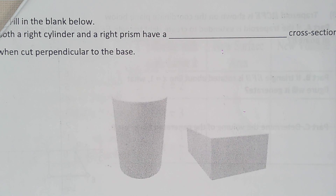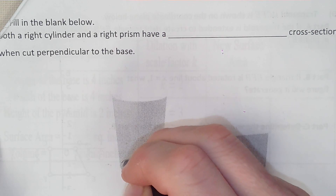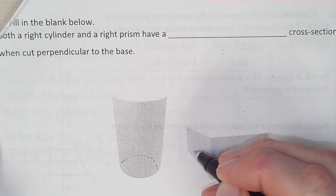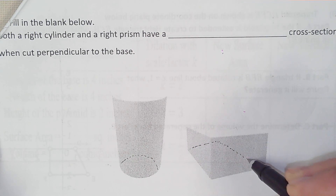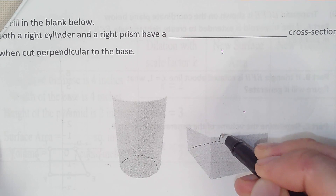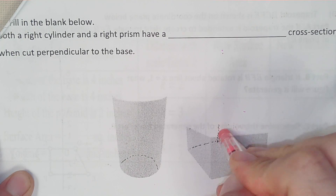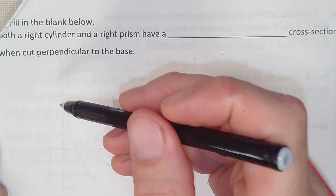Fill in the blank: both a right cylinder and a right prism have a blank cross-section cut perpendicular to the base. Cut perpendicular to the base means — if the base is a circle here, and the box is like this, and a sheet of glass cuts perpendicular to the ground, it goes right down the middle.